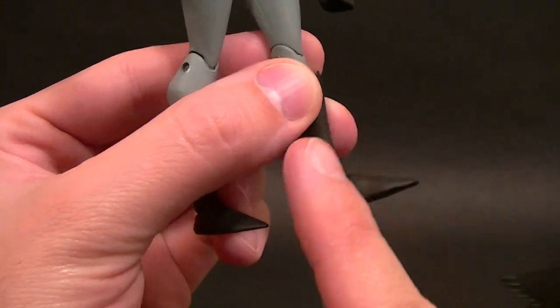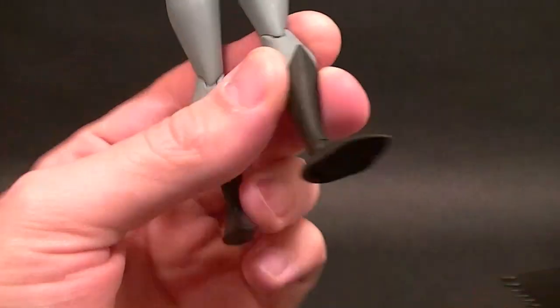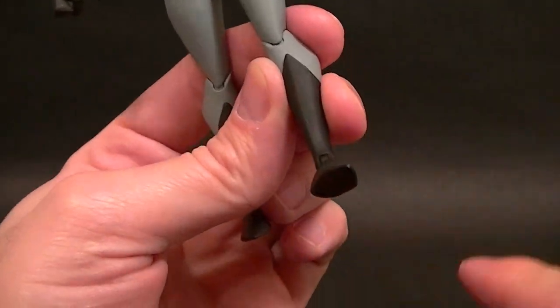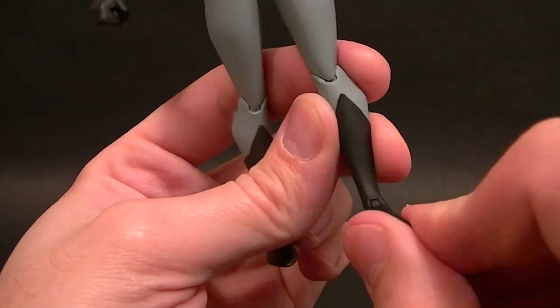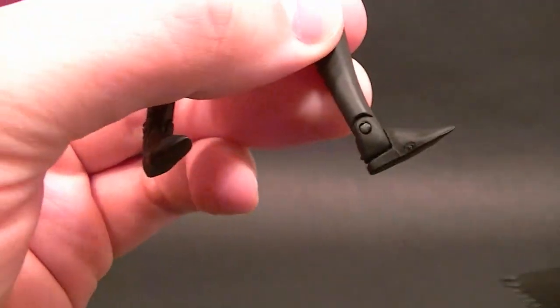Where the peg for the ankle hinge instead of going straight down it comes out this way which gives us our ankle rocker. Now that's okay, it's better than nothing, but it does give us that weird angled ankle rocker.